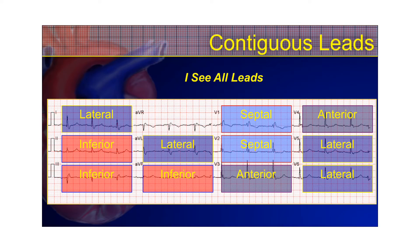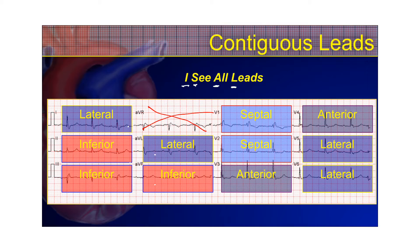Some people may have heard the phrase 'I see all leads' to remember all the different areas of the heart these leads look at. 'I' is for inferior, 'S' in 'see' for septal, 'A' in 'all' for anterior, and 'L' in 'leads' for lateral. Take a 12-lead tracing and write these areas on it. You'll notice AVR is kind of left by itself — it doesn't look at a particular part of the heart that's very useful when identifying STEMI.